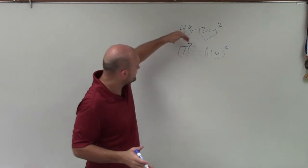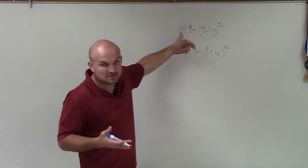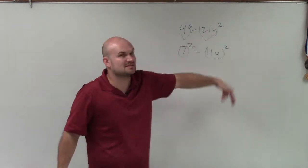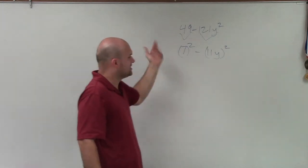And again, just double check this. 7 times 7, right? 7 squared. 7 times 7 and 11y times 11y is 121y squared. So perfect.